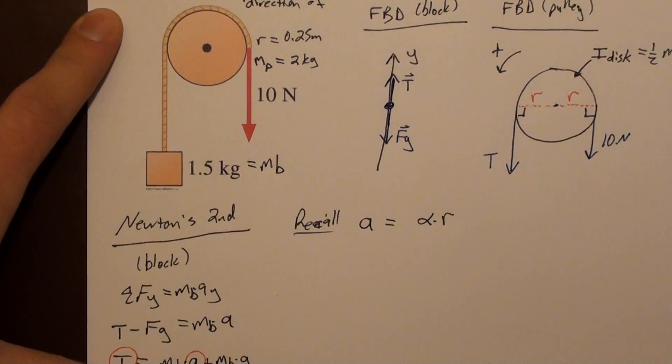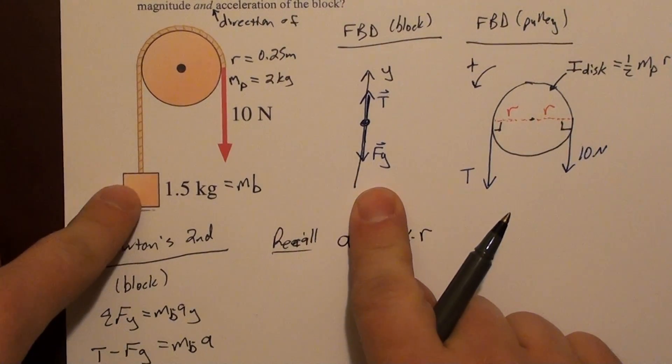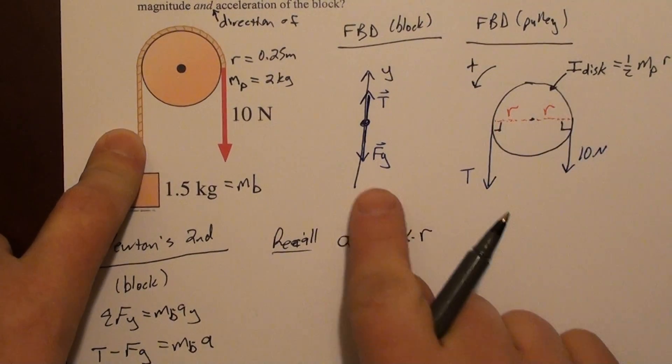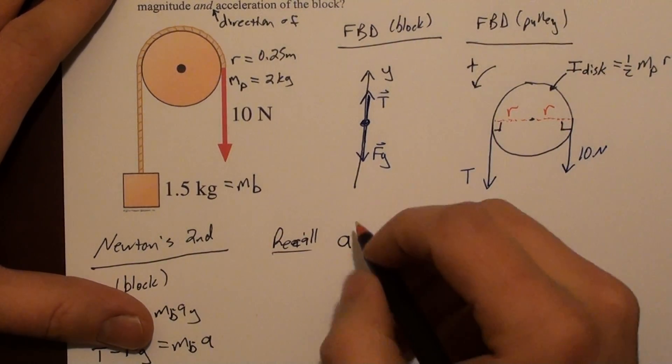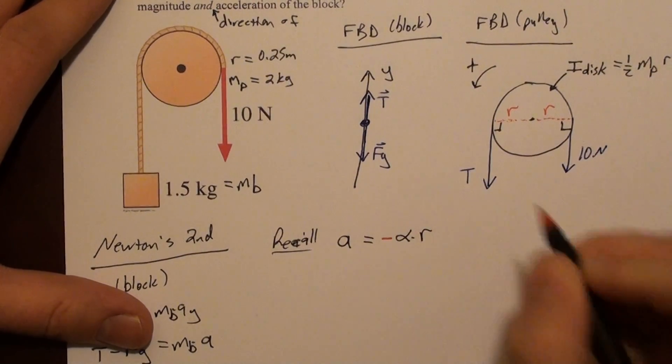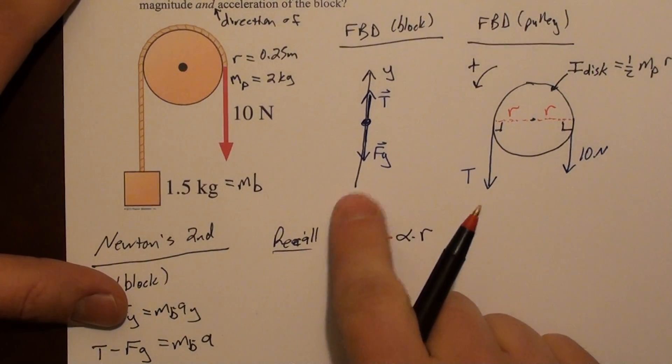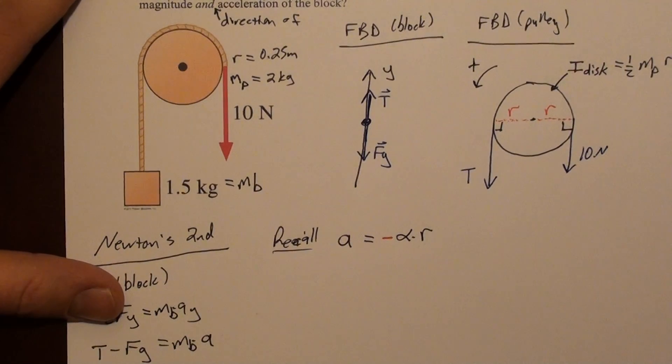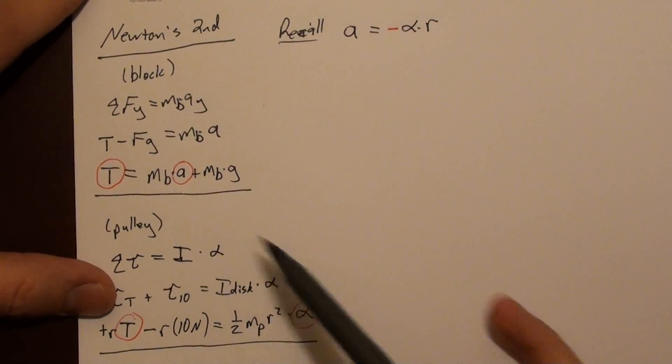But there's a problem. The problem is this. It's the way we've defined positive. If the block moves up, then the pulley rotates clockwise. So when the block moves in a positive direction, the pulley moves in a negative direction. So I need to include a negative sign in this relationship. I could have avoided that by calling one of these the opposite. I could have called down positive for this. Or I could have called clockwise positive for this. Either way, we have to deal with it. This is just how I'm going to deal with it in this problem.